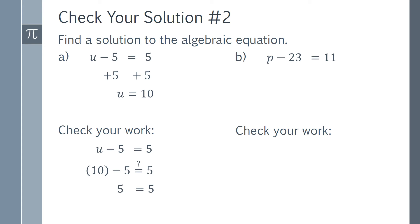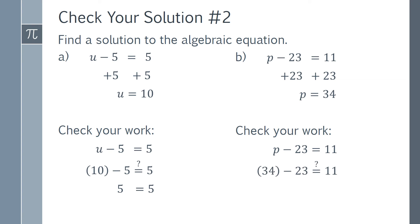Now for Part b. We have p minus 23 equals 11. We will use the inverse operation and add 23 to both sides. This leaves us with p equals 34. Now we need to check our work. Go back to the original equation and substitute 34 in for p. 34 minus 23 does equal 11, so our solution is correct.